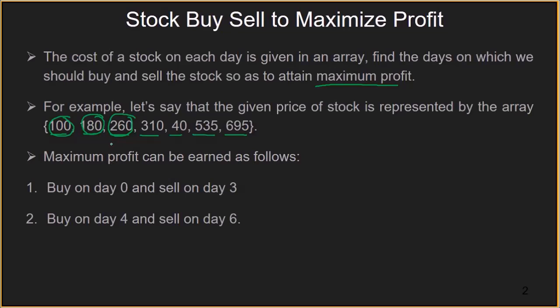To attain the maximum profit, we should buy and sell the stock twice. Firstly, we will buy the stock on day 0 at a price of 100 and sell on day 3 at a price of 310. Then again, on day 4, we buy the stock at a price of 40 and then sell it at a price of 695 on day 6.